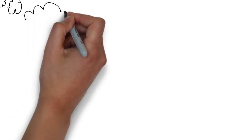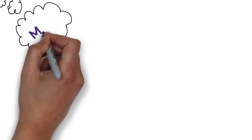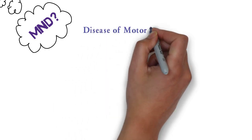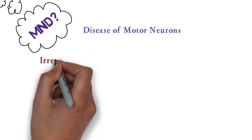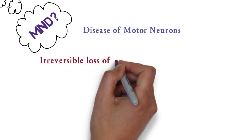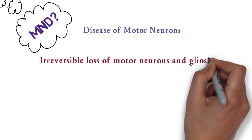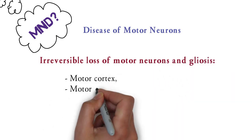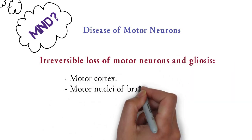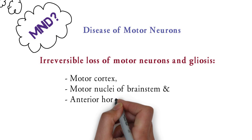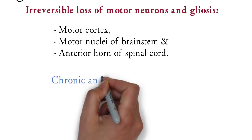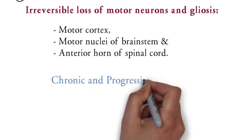So first of all, what is motor neuron disease? As the name suggests, it is a disease of motor neurons. It is an irreversible loss of motor neurons and gliosis in the motor cortex, motor nuclei of the brainstem, and anterior horn cells of the spinal cord. Unfortunately, the disease is chronic and progressive in nature.